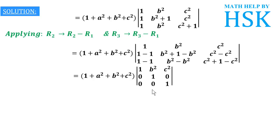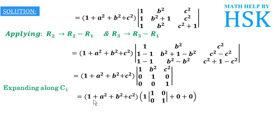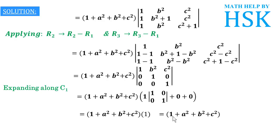Expanding along column 1, we get 1 + a² + b² + c² times 1 times the 2×2 determinant obtained by removing the first row and first column, which is the determinant of [[1, 0],[0, 1]] = 1. Therefore the result is 1 + a² + b² + c², which proves that the determinant equals 1 + a² + b² + c².